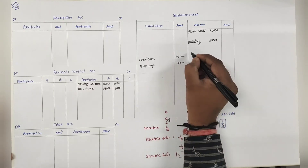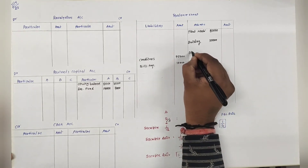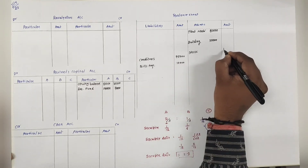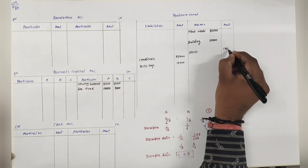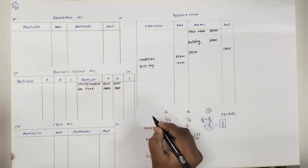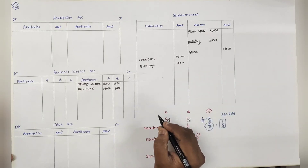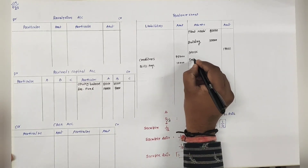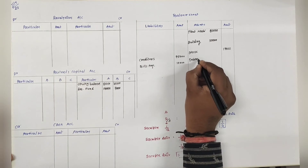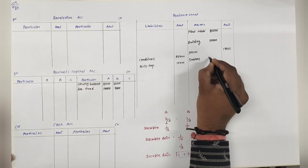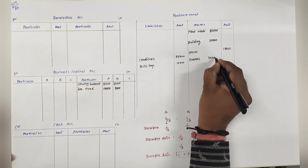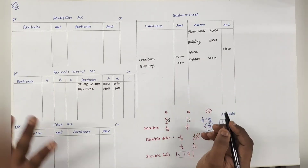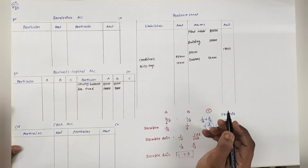Stock 17,000 - no adjustment. Debtors 50,000 - minus bad debt reserve है, तो अभी नहीं लिखेंगे, बाद में उसको लिखेंगे.